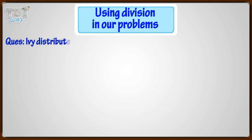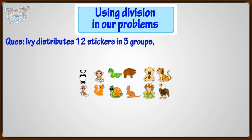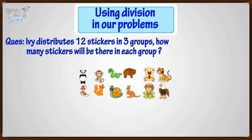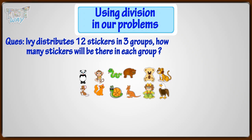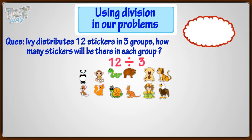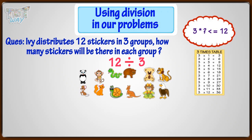If Ivy distributes 12 stickers into 3 groups, how many stickers will be there in each group? Here, Ivy is asked to distribute 12 stickers into 3 groups, and distribute means dividing. So she will divide 12 by 3. The quickest way is to just think: how many times can 3 go into the number 12? Think — 3 multiplied by what is less than or equal to 12? We get 3 times 4 equals 12. So 3 can go into 12 four times, or 12 divided by 3 equals 4.